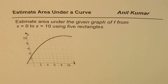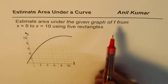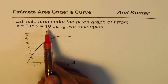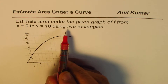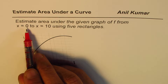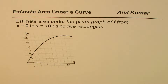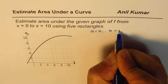I'm Alil Kumar and in this video we will learn a strategy to estimate area under a curve from the given graph. The question is: estimate the area under the given graph of f from x equals 0 to x equals 10 using 5 rectangles. The lower bound is a equals 0 and the upper bound b equals 10.